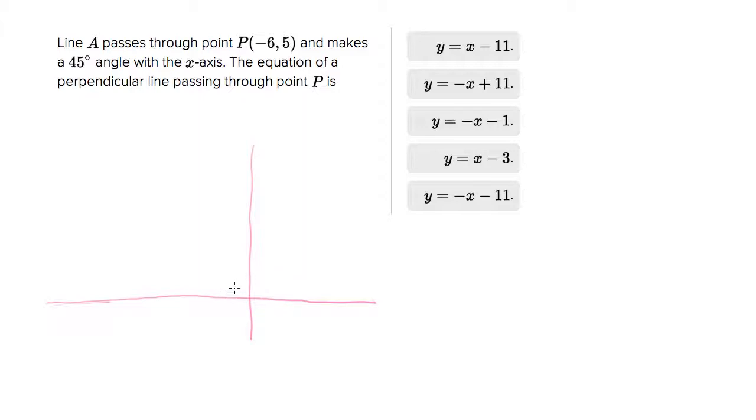So let's do that. They give us the point (-6, 5). So let's go over 1, 2, 3, 4, 5, 6 and let's go up 5: 1, 2, 3, 4, 5. Here's your point (-6, 5).